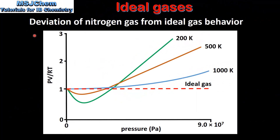In this graph we can see the deviation of nitrogen gas from ideal gas behavior. On the y-axis we have the product of PV divided by RT, and on the x-axis we have the pressure in Pascals. The dashed red line shows the behavior of an ideal gas, for which the product of PV divided by RT is equal to 1 under any conditions.